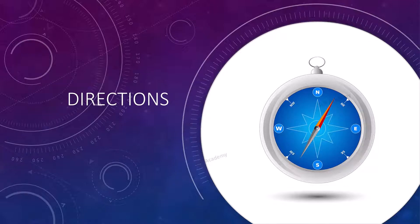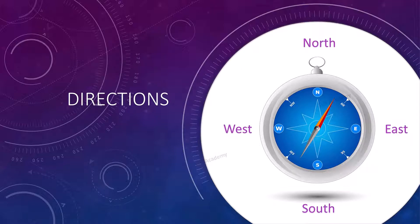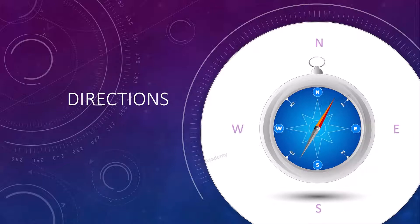Directions: North, East, South, and West are the four main directions or points of the compass. They are also called cardinal directions or cardinal points. These directions are also written in short form such as N, E, S, and W.